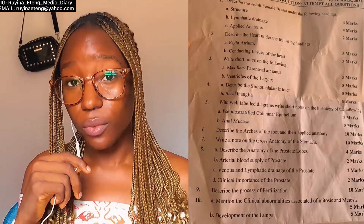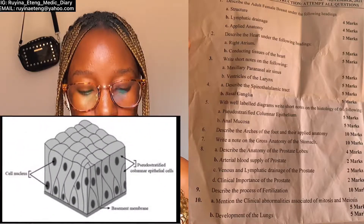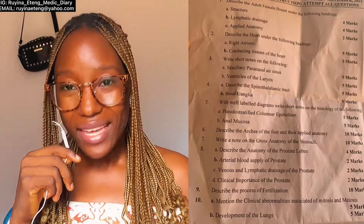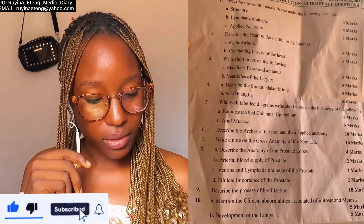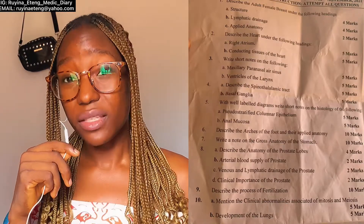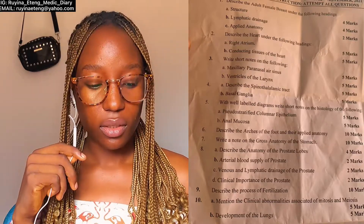Question five said: with well-labeled diagrams, write short notes on the histology of — (a) pseudo-stratified columnar epithelium and (b) inner mucosa. They've told you to use well-labeled diagrams, so keep about half a page for good diagrams. For pseudo-stratified columnar epithelium: write the introduction — why is it called pseudo-stratified, why is it called columnar, where is it found, what is its function. Clinical anatomy is not very important here, but note appendages like cilia if you can include them.